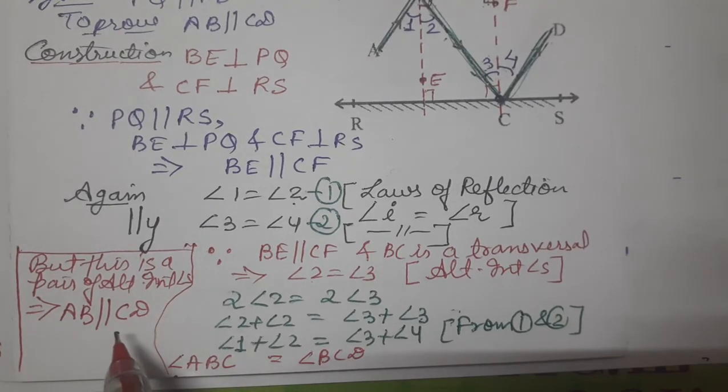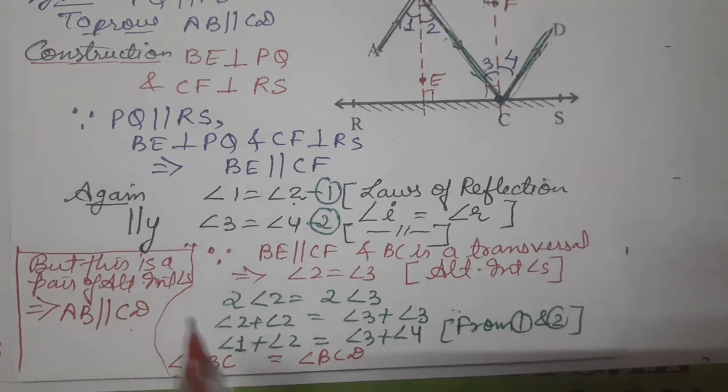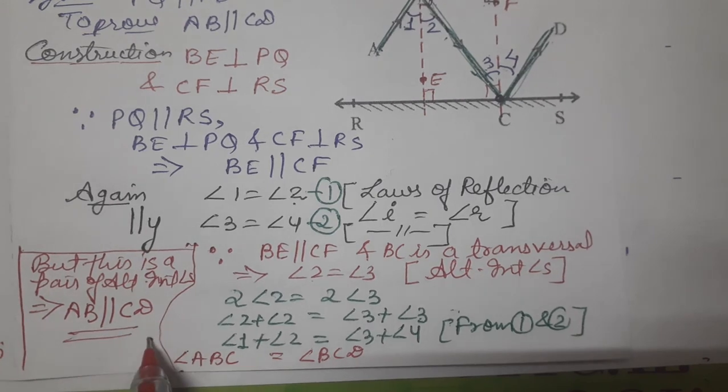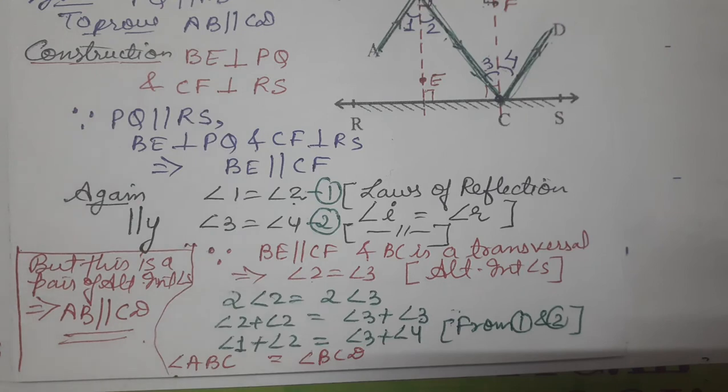This gives the result: AB is parallel to CD by converse of alternate interior angles theorem. If alternate interior angles are equal, then lines are parallel. AB is parallel to CD, and this completes the proof. I hope you understood. Thank you so much for watching the video.